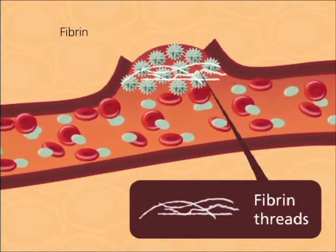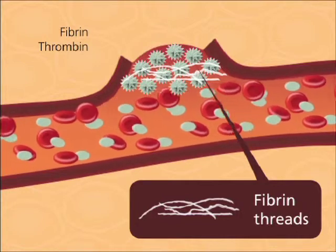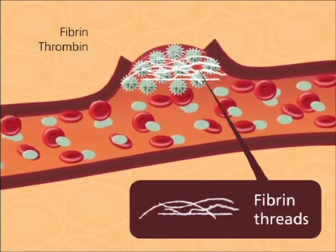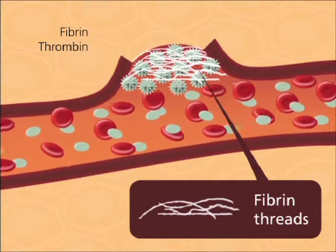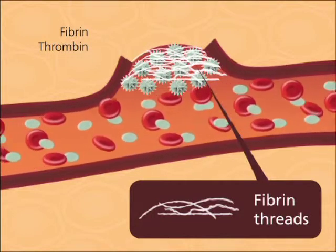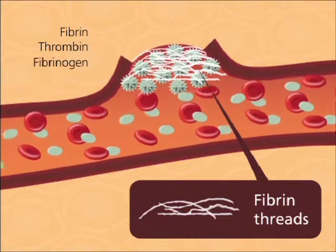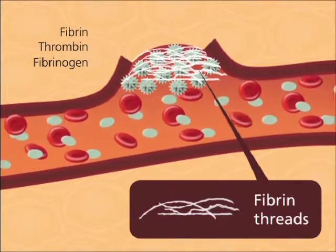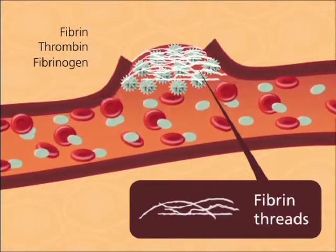As soon as a small amount of thrombin is formed, the clotting process accelerates and provides more and more thrombin into the wound. At high concentrations, this thrombin quickly converts fibrinogen to fibrin on the surface of the platelet aggregate to stabilize the hemostatic plug.